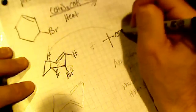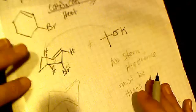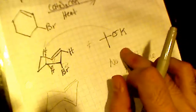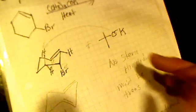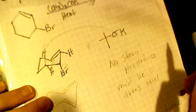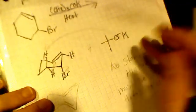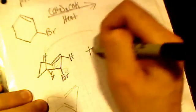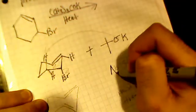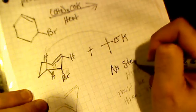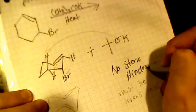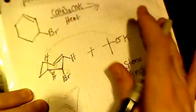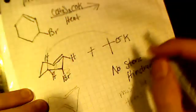Using the bulky base tert-butoxide, sorry this is coming out a little weird, tert-butoxide can be used. There is gonna be a reaction because there is no steric hindrance, right? There's no big bulky molecules getting in the way of tert-butoxide coming in and removing that hydrogen.